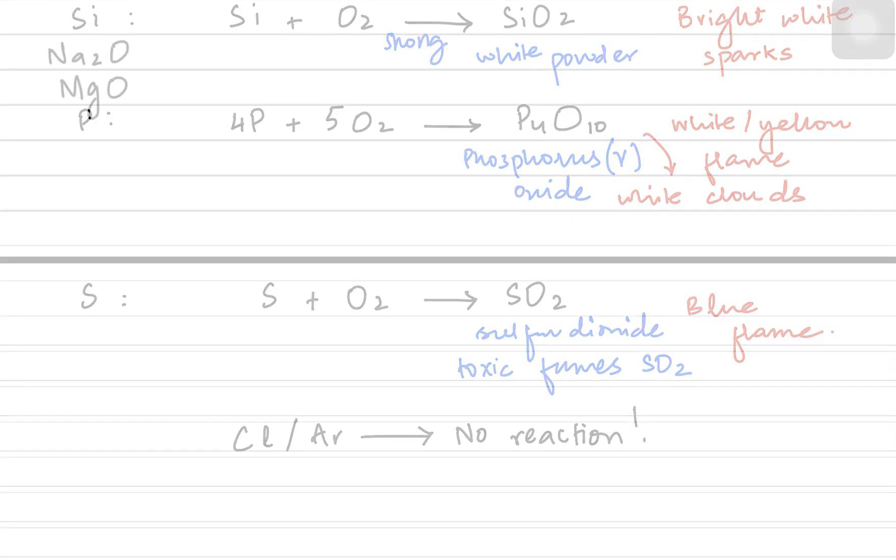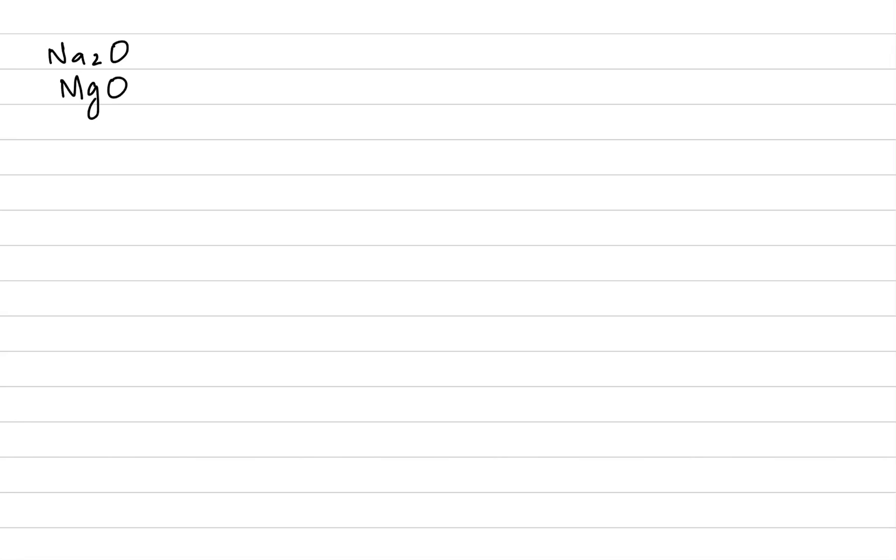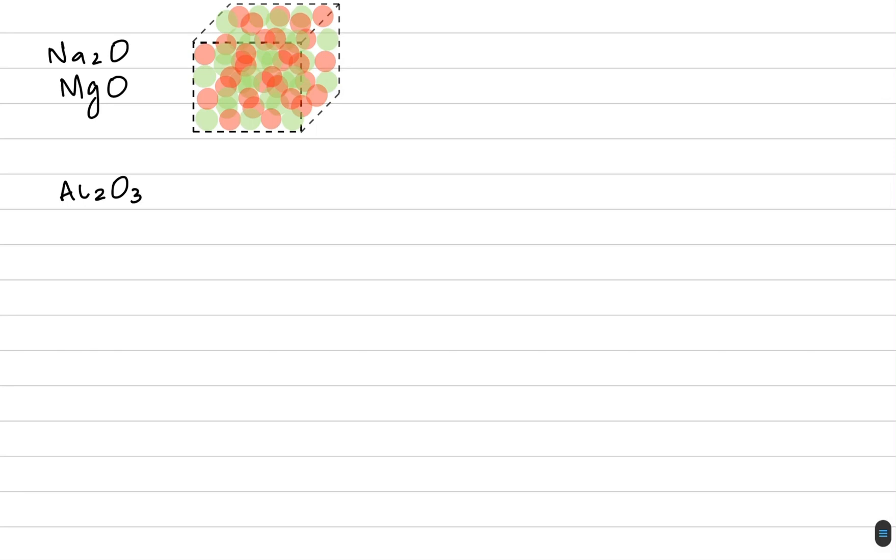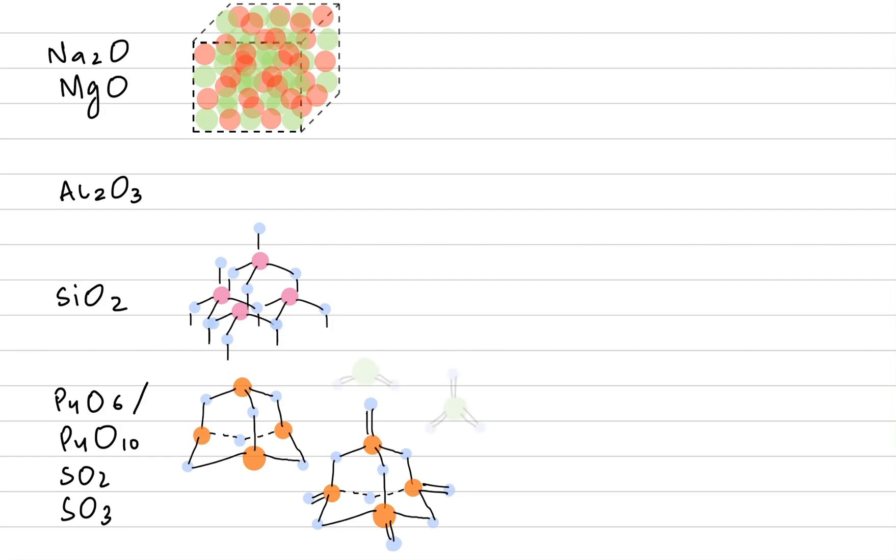Recalling about the oxides, we know sodium oxide, MgO, and aluminum oxide all three have giant ionic lattices because they have ionic bonding in them. It's a 3D giant ionic lattice. This silicon dioxide is a giant covalent structure while phosphorus oxide, sulfur oxides are simple molecules. Right now you can see the 3D structure of the silicon dioxide while P4O6, P4O10 have the structures represented here with SO2 and SO3 coming at the back. So these are simple molecules.